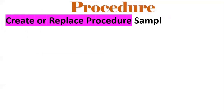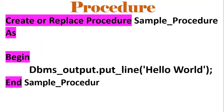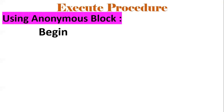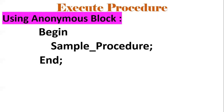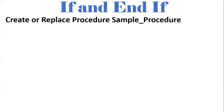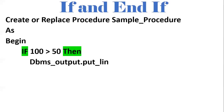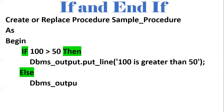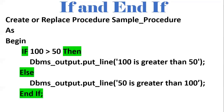For procedures, the syntax is CREATE OR REPLACE PROCEDURE procedure_name AS BEGIN — for example a sample procedure that prints Hello World using DBMS_OUTPUT, which is used to see the result on the console. To execute the procedure we use an anonymous block. The IF/END IF is the conditional statement for any conditional check — for example, if 100 is greater than 50 then display '100 is greater than 50' else '50 is greater than 100'. Since 100 is greater than 50, the first block executes.